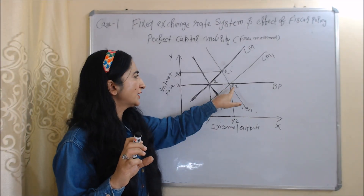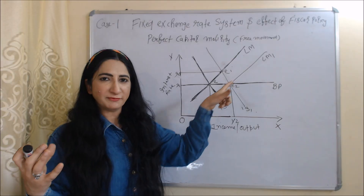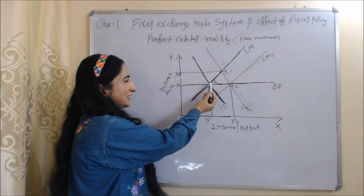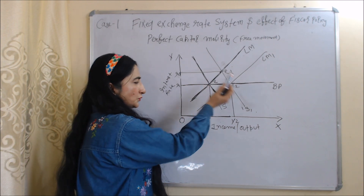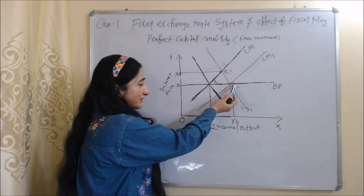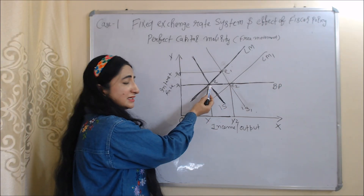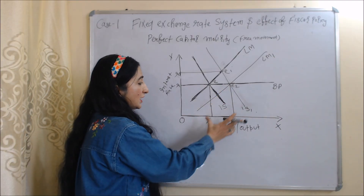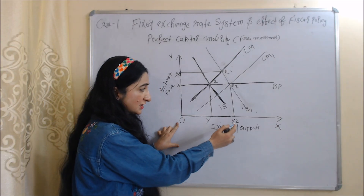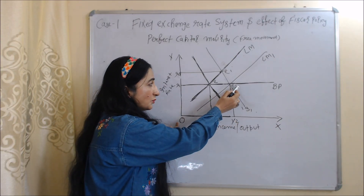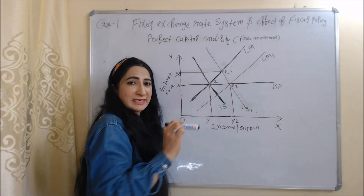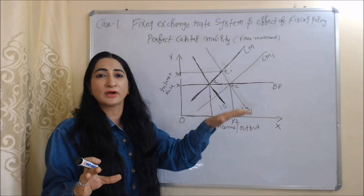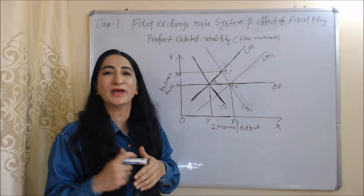So our new equilibrium point is E2. To see the effect of fiscal policy, we compare initial equilibrium point E with new equilibrium point E2. You can see E2 is much better than E — at point E, our national income is OY, but at E2, our national income is OY2. Our national income is more at E2 compared to E. So we can say that under the fixed exchange rate system, our fiscal policy is very effective.